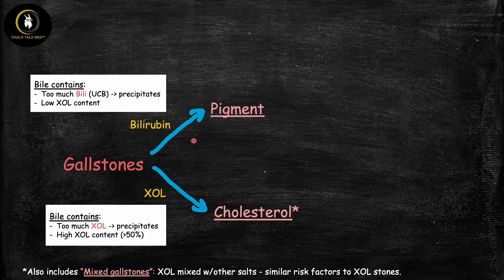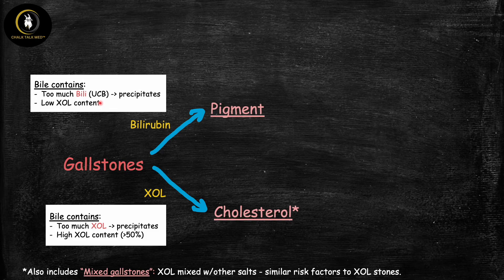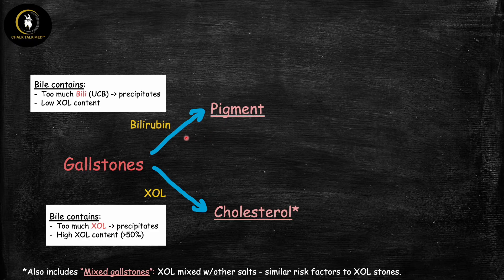Now let's move on to pigment gallstones. The problem here is too much bilirubin inside bile. Under normal circumstances, most bilirubin in bile is conjugated with only a tiny amount unconjugated. In pigment gallstone formation, there is too much unconjugated bilirubin in bile. Since unconjugated bilirubin is not water-soluble, it precipitates by forming salts — for example with calcium — forming sludge and stones. The underlying problem is excess unconjugated bilirubin inside bile.